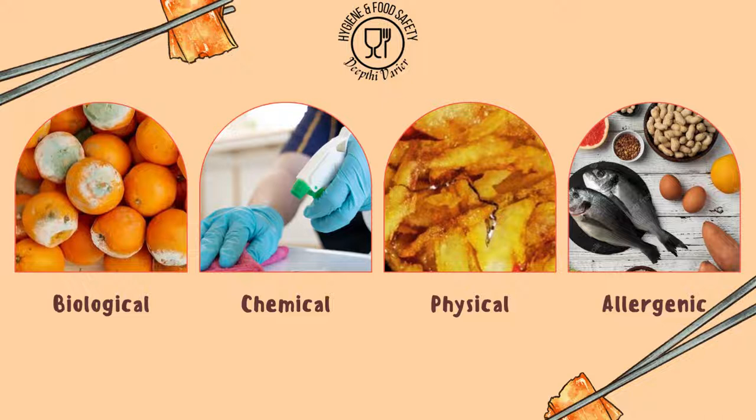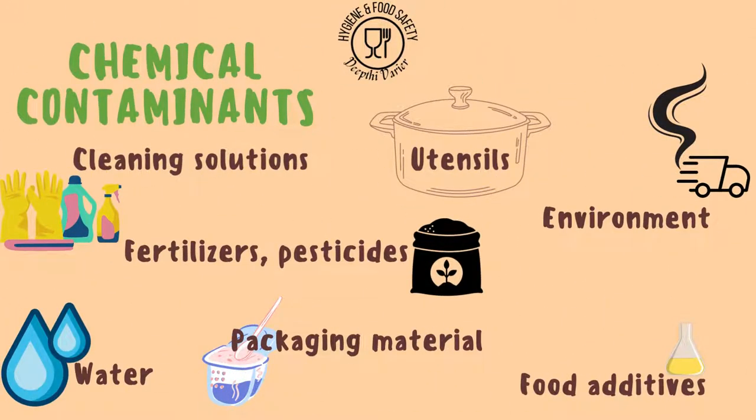Now let's look at the other three types of contaminants in food. The next type are the chemical contaminants. Chemicals are introduced into food from various sources and can cause harm to the human body when we consume food containing them. This includes cleaning solutions frequently used for disinfection — if their residue is present on a food preparation surface or equipment, or if you spray a chemical very close to an uncovered food item, that chemical is now contaminating your food.